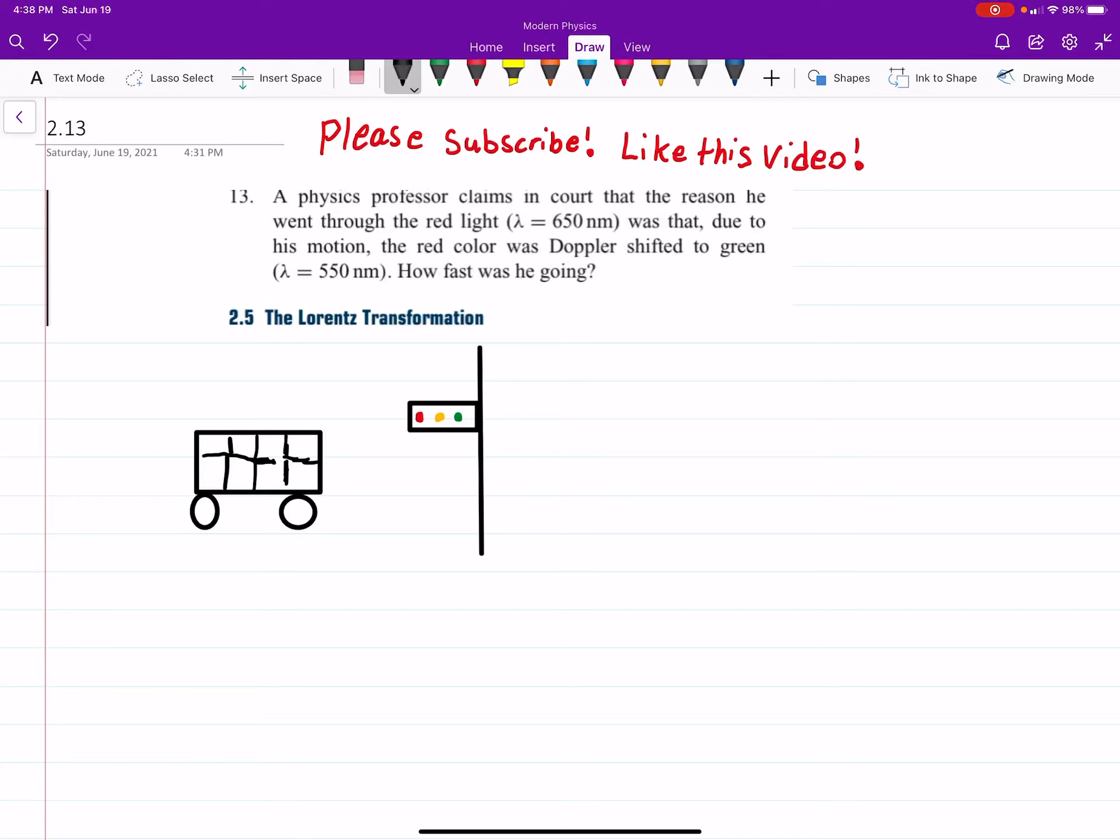Alright, so this is problem 13 on Kenneth Crane's Modern Physics book. In this case, a physics professor claims in court that the reason he went through the red light with a wavelength of 650 nanometers was that due to his motion, the red color was Doppler shifted to green, lambda equals 550. How fast was he going?